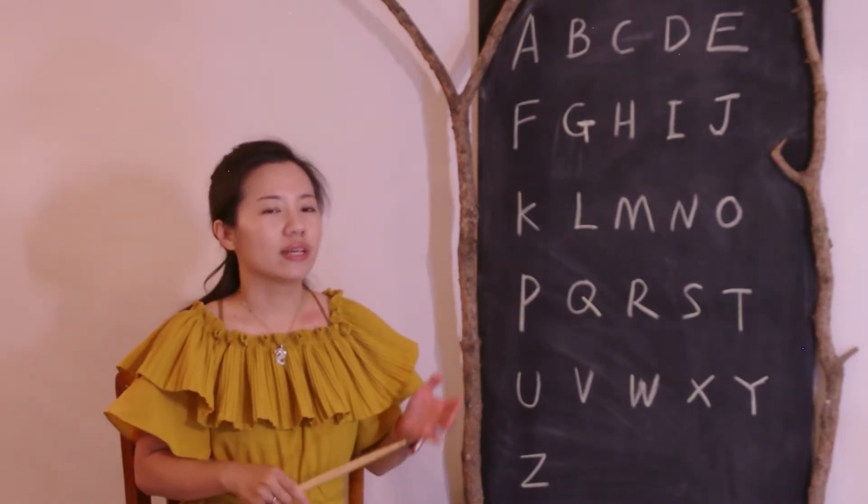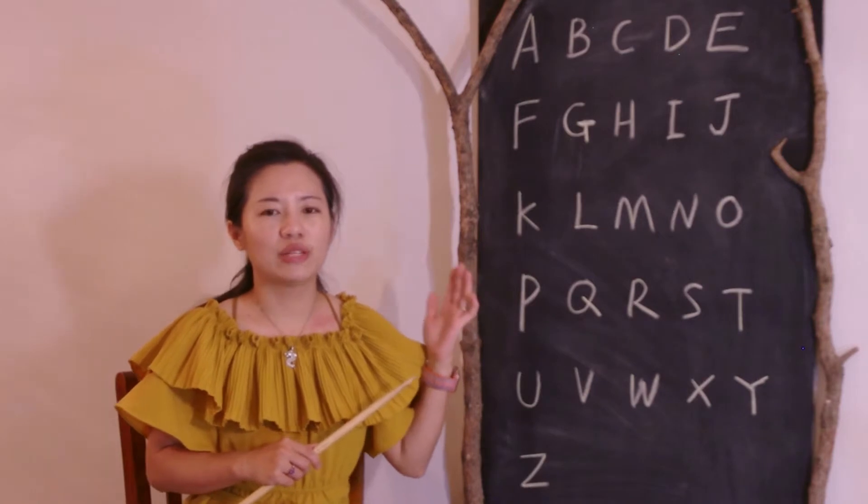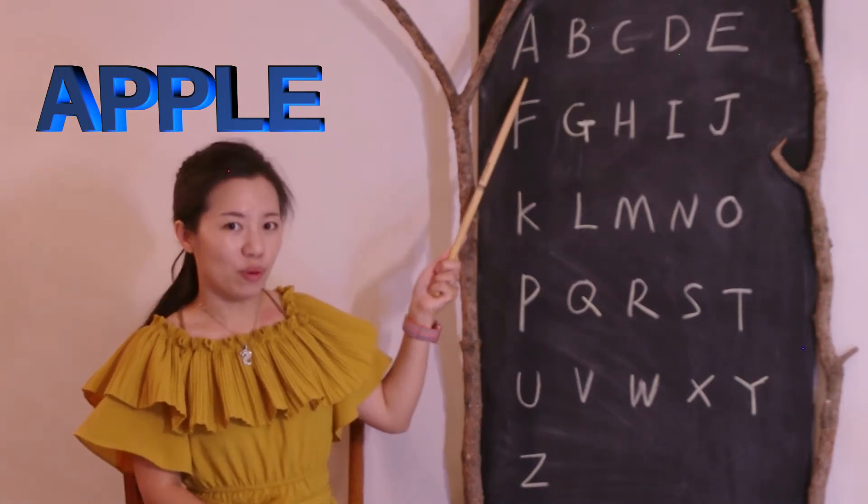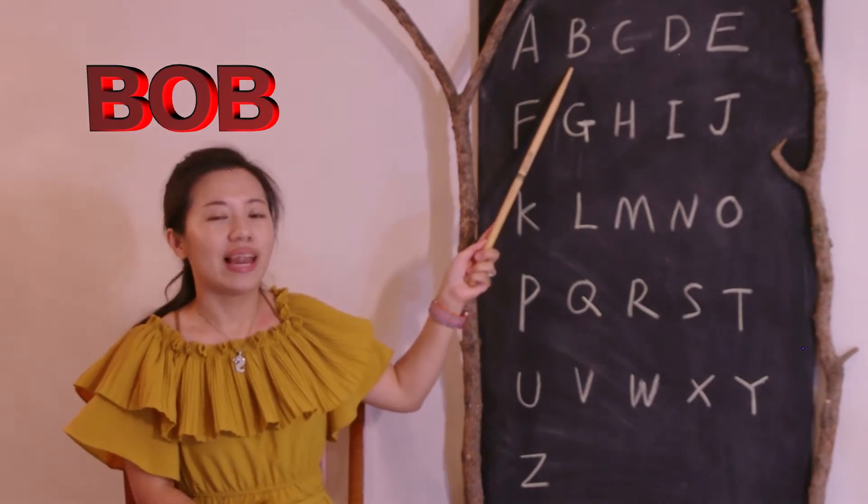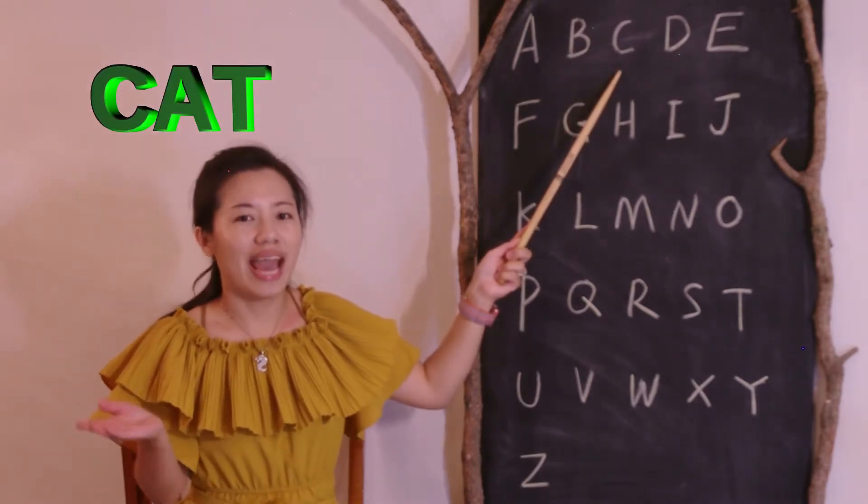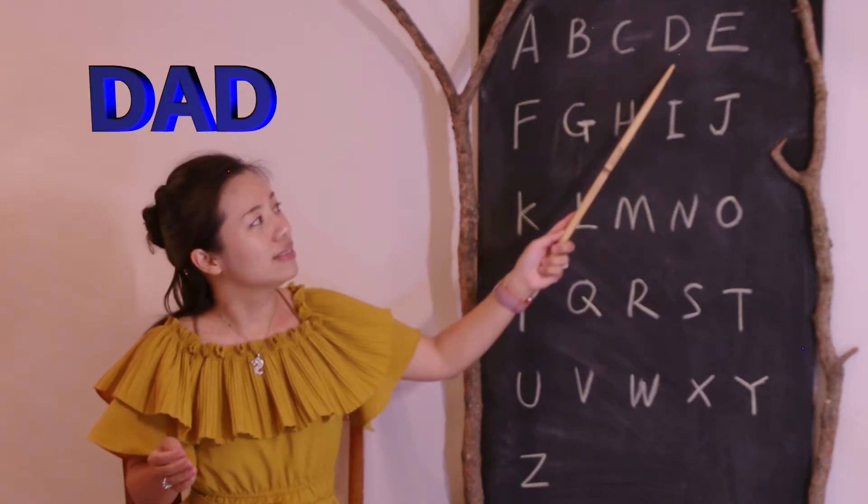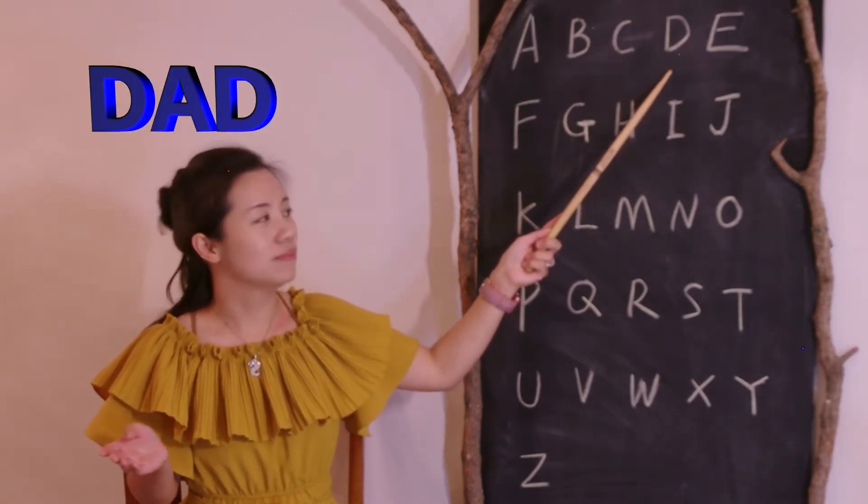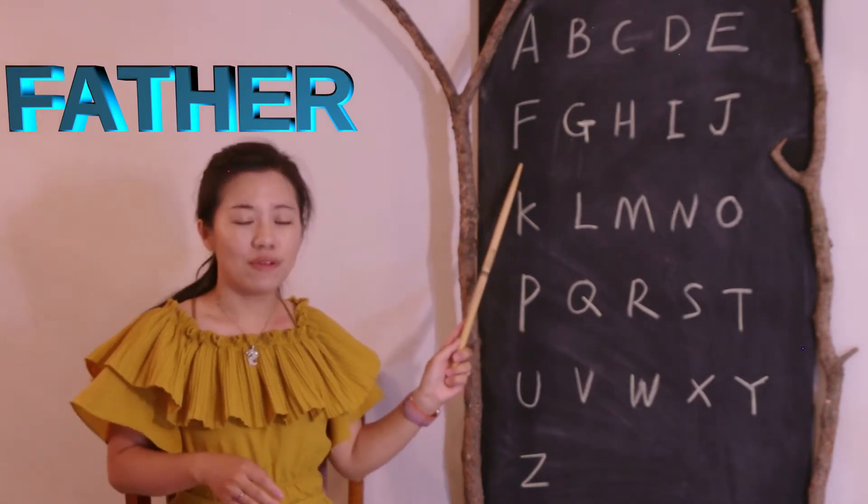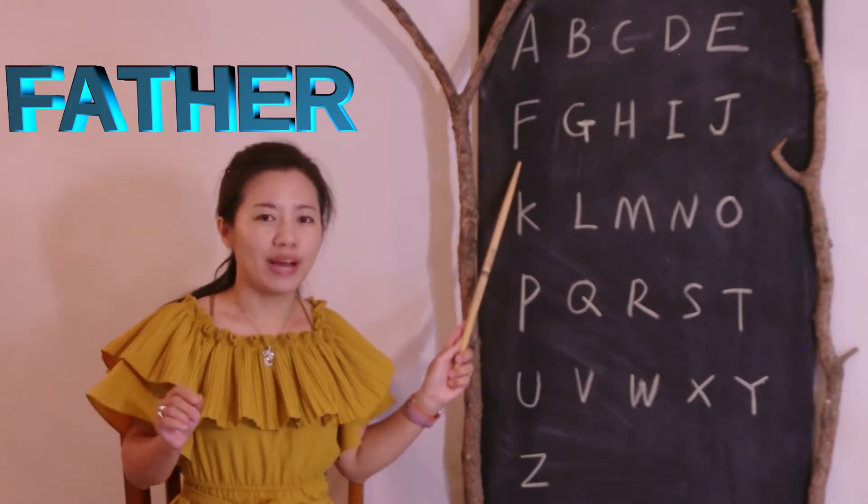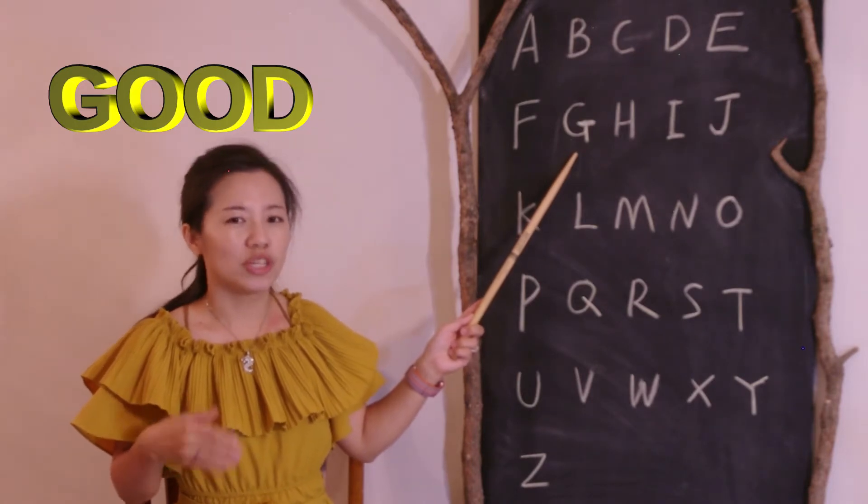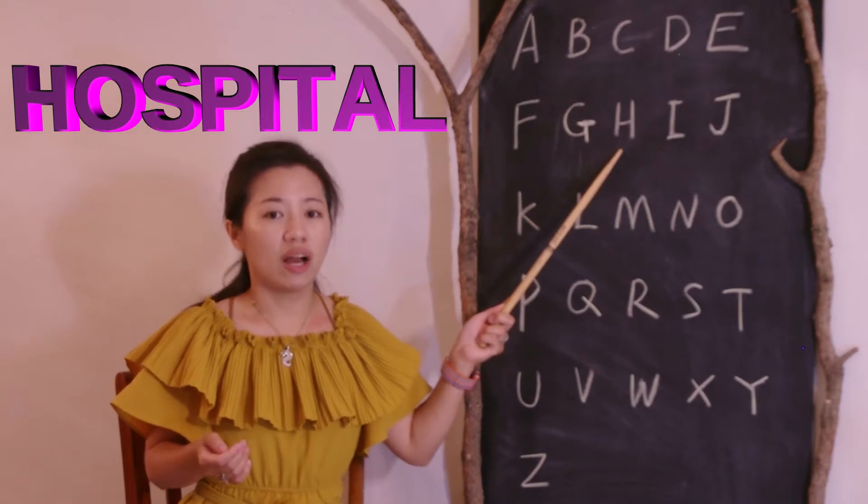OK, now let's start with every word of letters. A like apple. B like Bob. C like cat. D like dad. E like eat. F like father. G like good. H like hospital.